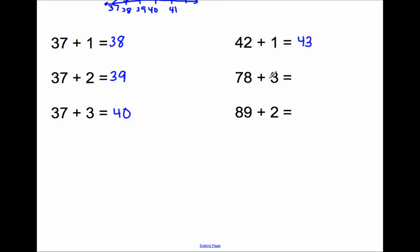78 plus 3 is 78, 79, 80, 81. 78 plus 3 equals 81.